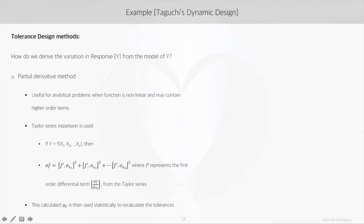The partial derivatives method is based on the Taylor series expansion. It states that if y is a function of x1 to xn, then the model variance in y is the sum of the variances of individual components or variables. It is expressed as the summation of the square of the first-order partial derivatives multiplied by the standard deviation of each x.